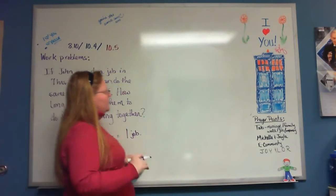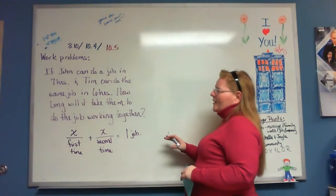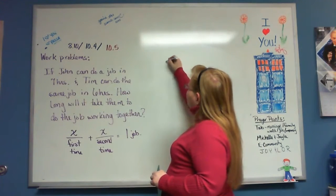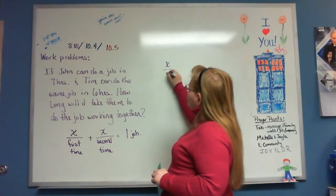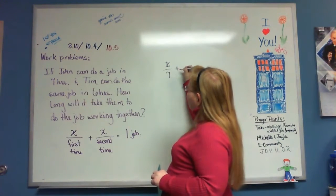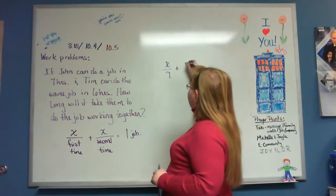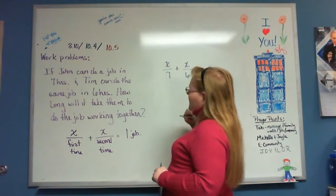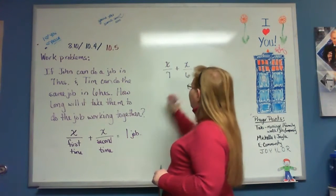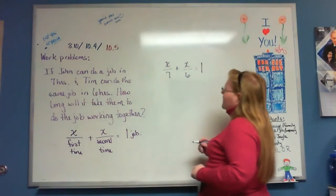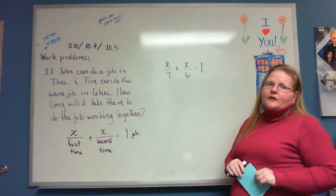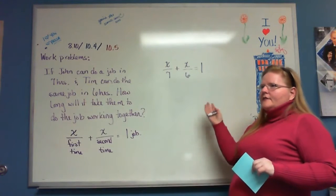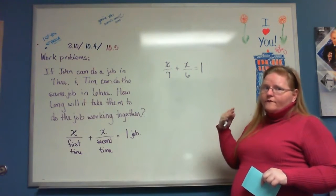For this particular problem, John can do the job in seven hours, so John's part is x over seven. Tim can do the same job in six hours, so Tim's part is x over six. They want to know how long it's going to take them to complete one job, so I put down my one. Now it's just like a problem from our last section where all you have to do is find the common denominator.